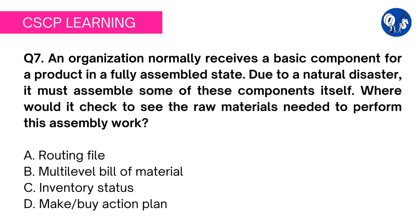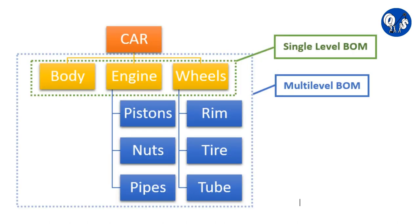A bill of material (BOM) is a centralized source of information required to manufacture a product — a list of the items needed to create a product and instructions on how to assemble it. As a car manufacturer, you check the bill of material to see which parts are required to manufacture the whole car: body, steering wheel, dashboard, lights, indicators, windscreen, engine, nuts and bolts, wheels, etc. A multi-level bill of material contains several sub-assemblies, each of which can also be a single-level BOM.